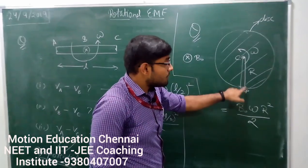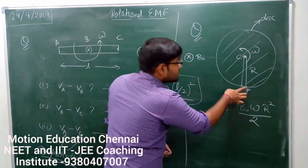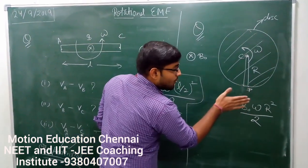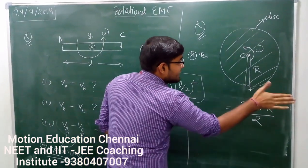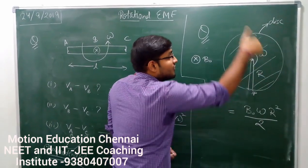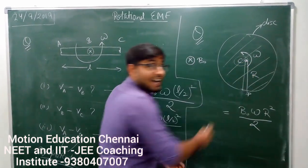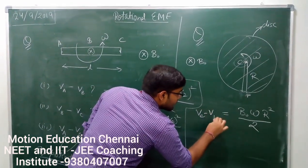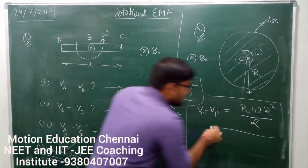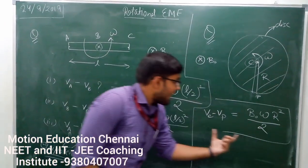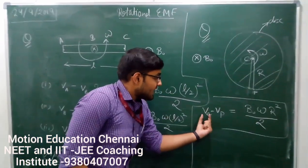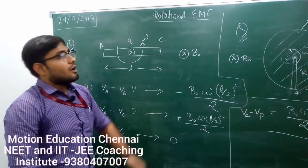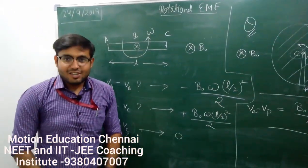Now which one is at higher potential? We do V cross B. Taking point P, velocity at this point is in the right direction, so V cross B will be in the upward direction — that is why C is at higher potential. So we write VC minus VP = B₀·omega·R²/2. This is the magnitude and direction. So this is all about rotational EMF. Thank you.